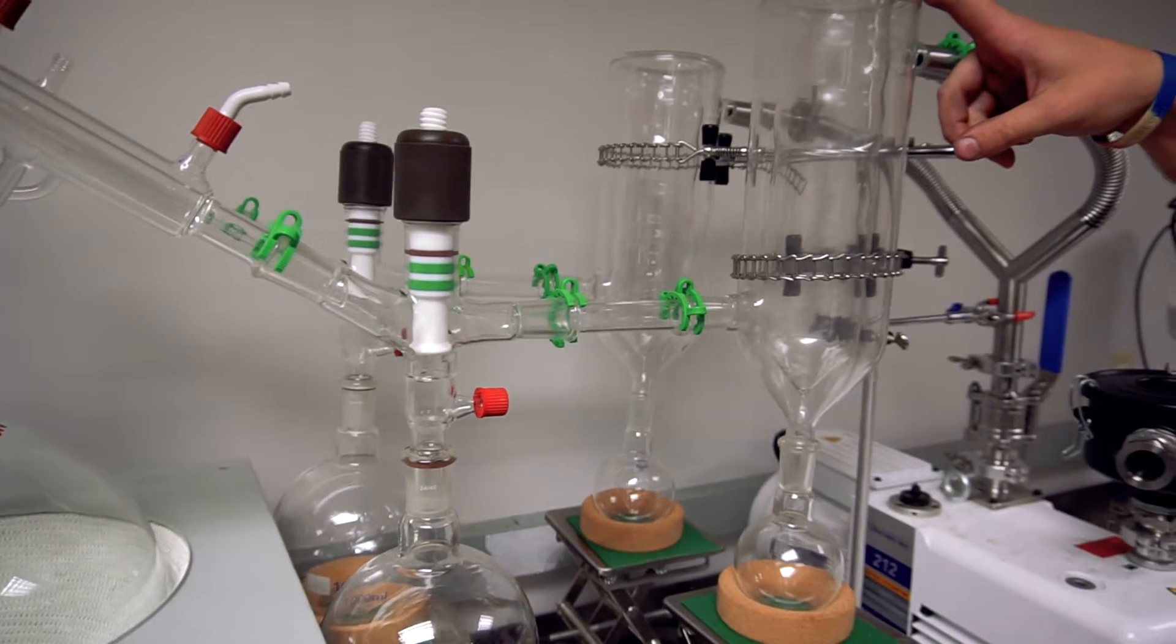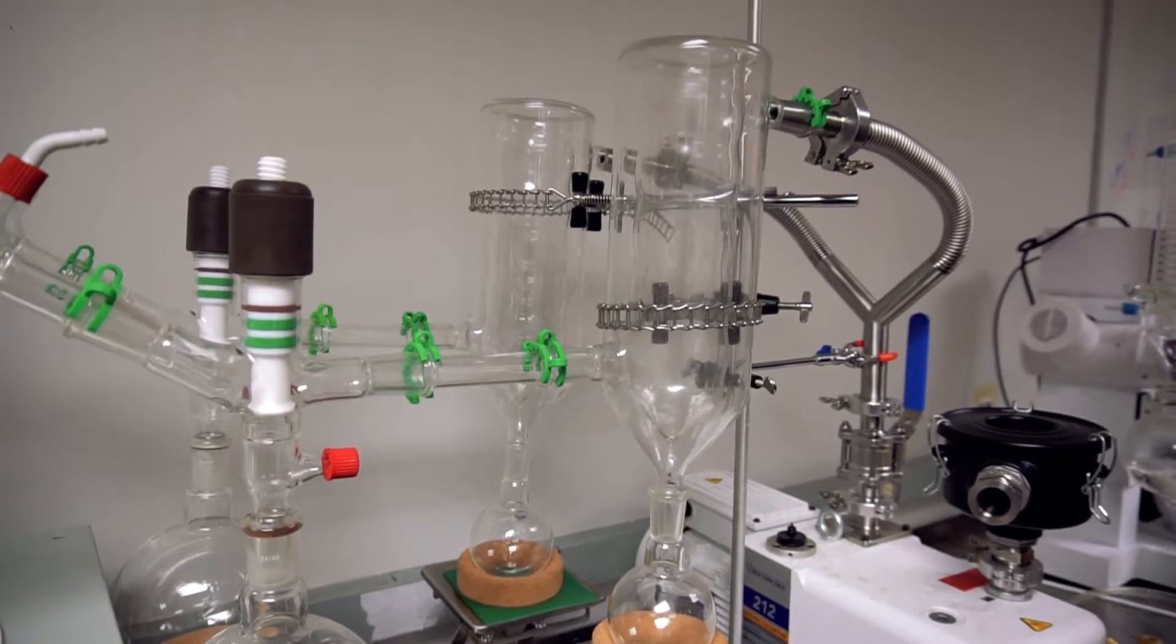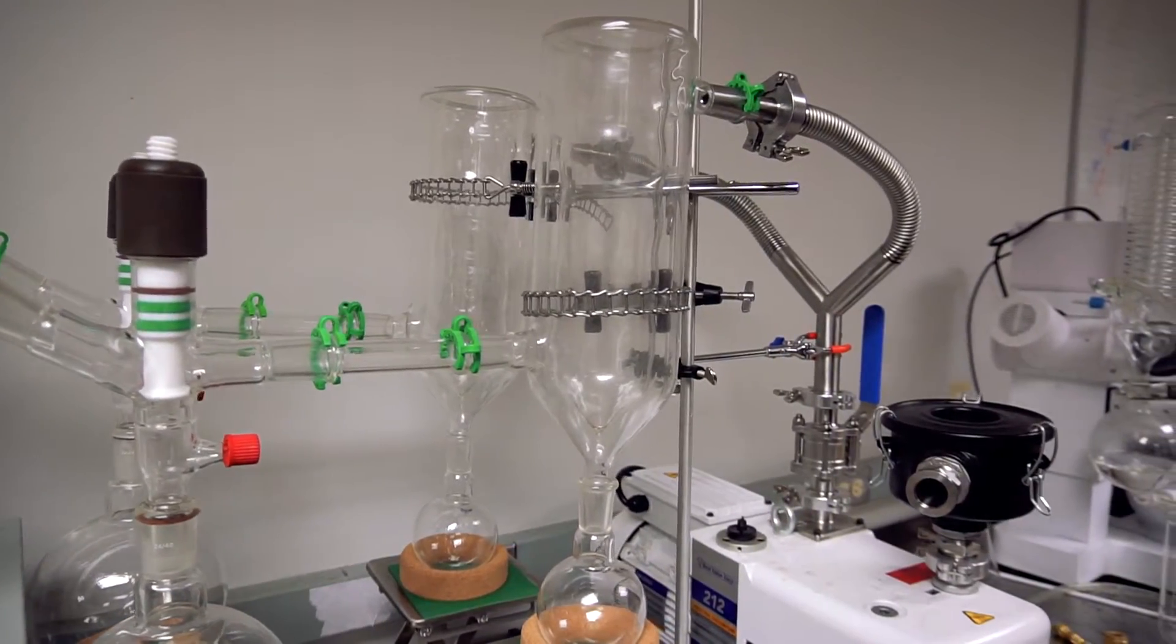Then it goes to our Dewar cold traps. They have ribs for extra surface area in the middle. That will help condense any vapors that make it past your condenser on the short path head.